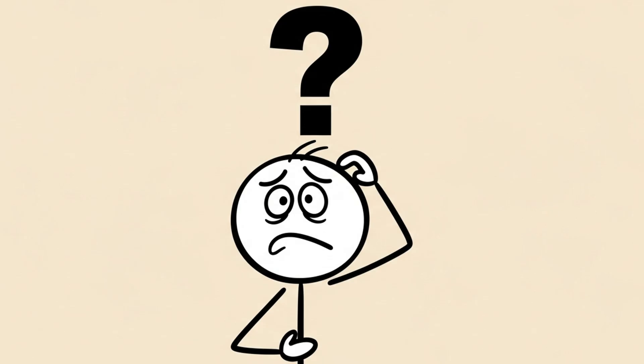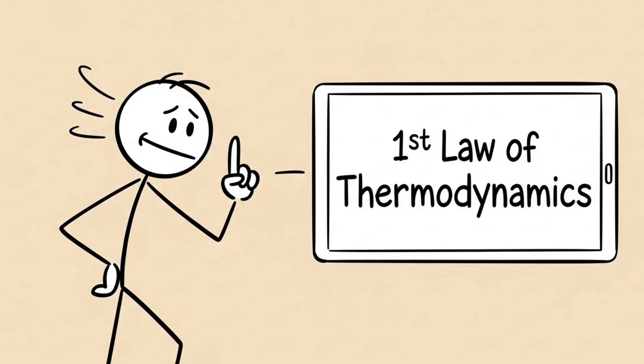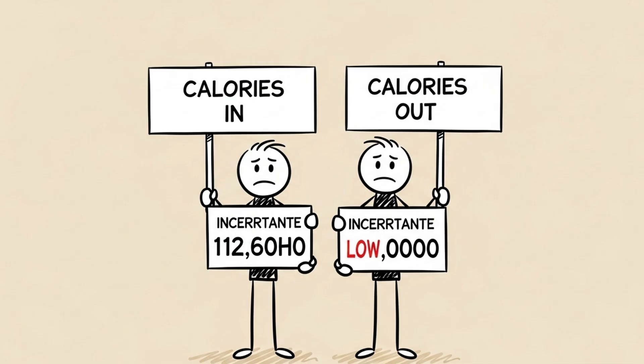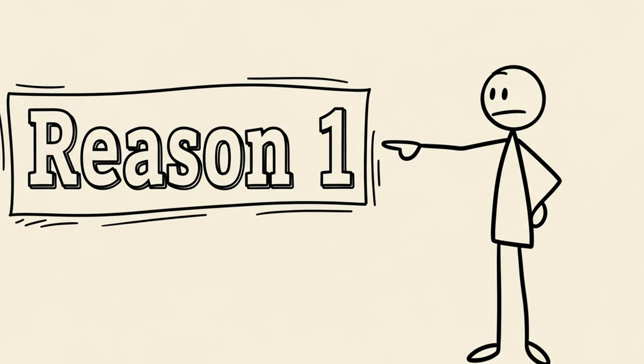So, if this law is true, why isn't it working? Because the problem isn't the law. The problem is the numbers. The numbers you are using for calories in and calories out are wrong. And it starts with the single biggest reason.